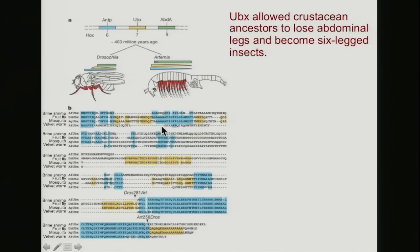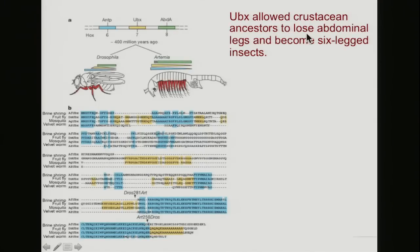The mutations we see in this particular gene are known to regulate how many legs can develop, and the mutation involved in the rise of modern insects would have allowed their crustacean ancestors to lose a lot of those abdominal legs to become six-legged insects.